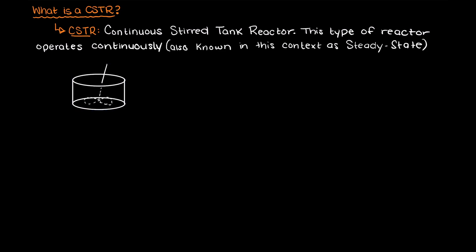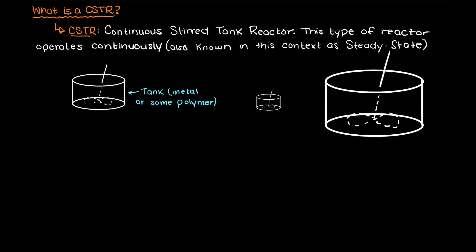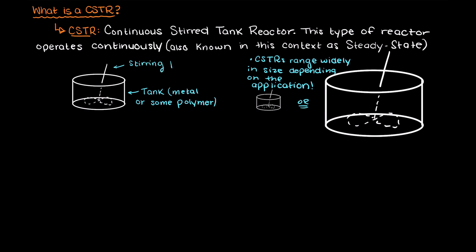What does a CSTR look like? CSTRs are commonly just a tank — this could be small like a pilot plant, or very large for an industrial setting. In this tank there is some stirring apparatus that moves and agitates the fluid within the reactor to promote better mixing. There are tons of different designs for the stirrer, many of which are best for a given situation.